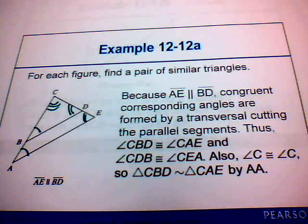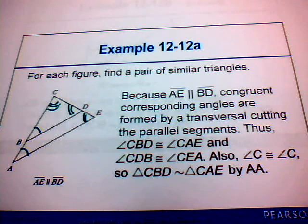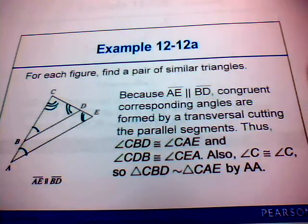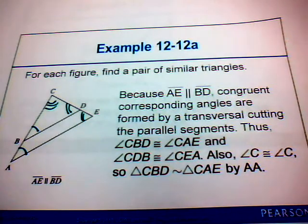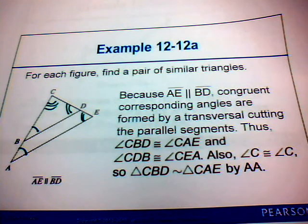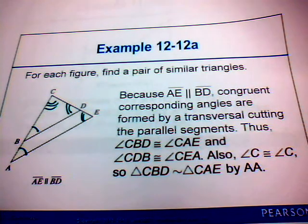Notice that angle C is the common angle for both triangle CBD and triangle CAE, so angle C equals itself. Therefore, triangle CBD is similar to triangle CAE by the AA similarity property — you have a pair of angles of one triangle congruent to a corresponding pair of angles of the second triangle.